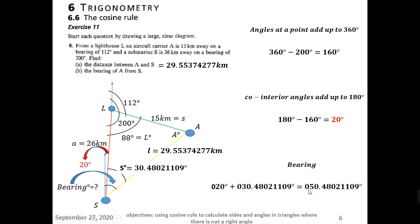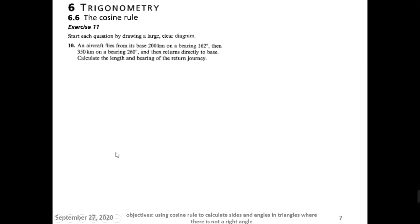The bearing is written as three digits: 050.5, because bearings are angles measured from the north clockwise and must be expressed in three digits. This is the answer for the second part of the question. You may try this question on your own, and please watch the video again if you struggle with any of the steps. Thank you for watching, sharing, and subscribing to my YouTube channel.